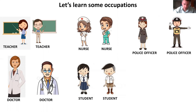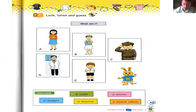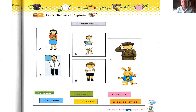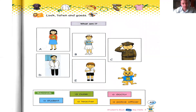We continue with an exercise. It's time to play a bit. Here there are five occupations. You can take your book page 43, use a pencil and an eraser, and you can write. What am I? Click on pause, try this, and after that we check together.